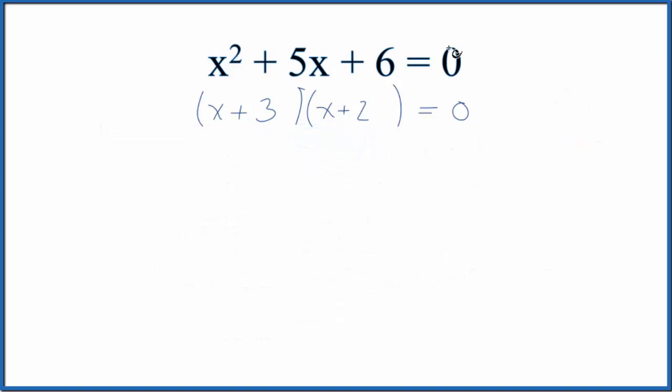We want to find the values of x that make this whole equation 0. So if x were equal to minus 3, minus 3 plus 3, that equals 0 times minus 3 plus 2. It really doesn't matter because 0 times anything is going to be 0. So x equals minus 3. That's one of the solutions.